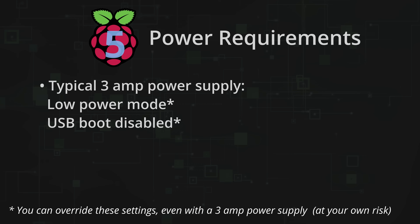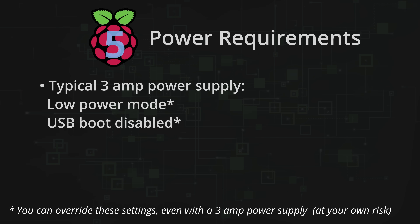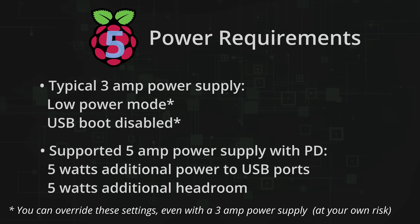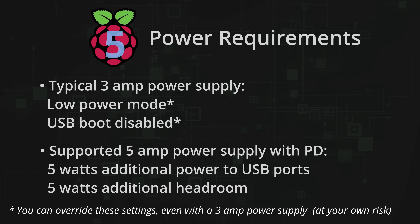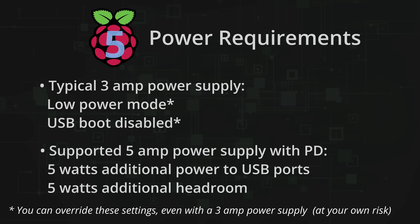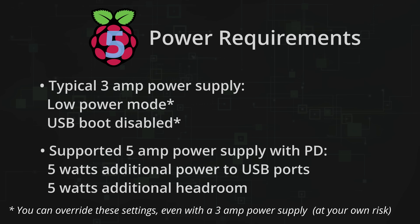With a 3A power supply, the new Pi will activate low power mode, which comes with a few penalties — such as USB ports having less power and USB boot being disabled. However, if you use a fully supported 5A power supply, the full potential of the Raspberry Pi 5 will be unlocked. In that case, the USB ports will be provided with an additional 5W of power, with the entire Pi having 5W more headroom. The new Pi is able to utilize this additional power because it supports power delivery, which is yet another improvement with the new model.